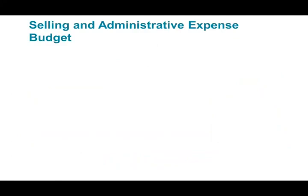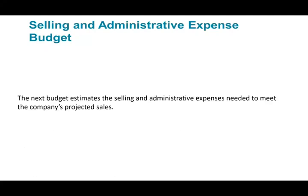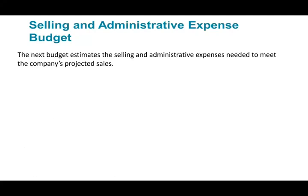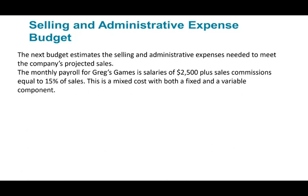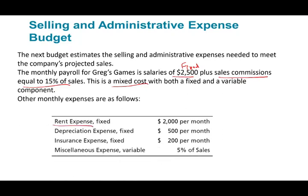The next budget to complete is the selling and administrative expense budget — to estimate the expenses needed to meet projected sales. The monthly payroll for Greg's Games salaries is $2,500 plus 15% of sales in commissions — a mixed cost with both fixed and variable components. Other monthly expenses: rent $2,000 (fixed), depreciation $500 (fixed), insurance $200 (fixed), and miscellaneous expense at 5% of sales (variable). So there are two variable costs: sales commission and miscellaneous expense.